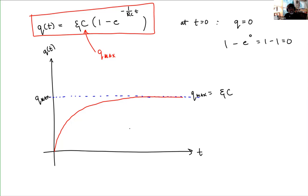So with that said, after a few seconds it might be 99.999999% charged. After a minute, it might be 99.999999% on a thousand decimal places charged. So even though it would take an infinite amount of time to be completely charged, it could actually happen relatively quickly.